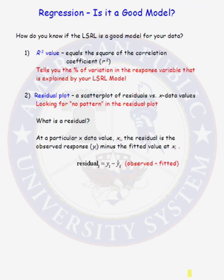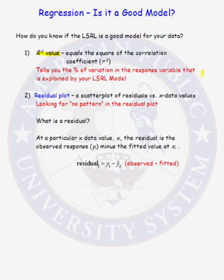The answer to that question comes down to two different components. The first is an r-squared value. The r-squared value just equals the square of the correlation coefficient. Remember, the correlation coefficient is a measure of the strength and the direction of the linear association between the two variables. The r-squared value tells you the percent of variation in the response variable that is explained by the least squared regression line model.